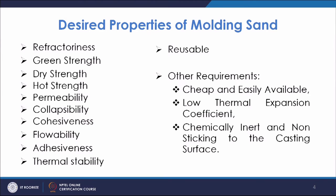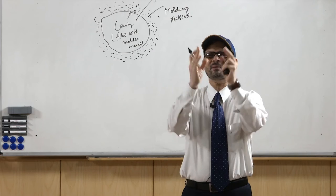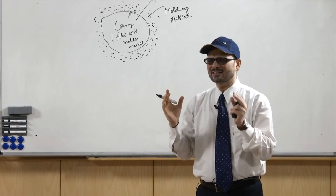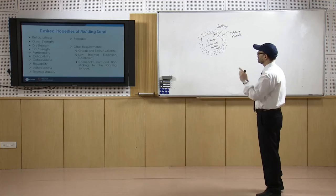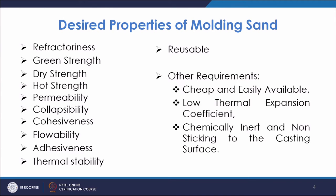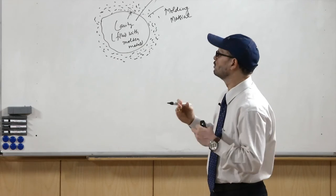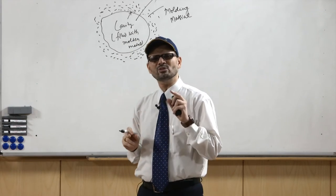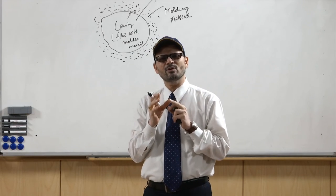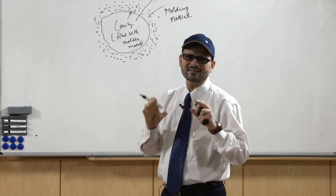Cohesiveness is the attraction between the sand grains themselves. If there is attraction between the sand grains it will help in giving the mold a proper shape. Because of cohesiveness they are together, and once put in a certain shape they maintain that shape. Flowability is the property of molding sand by which it can flow into the different corners of the mold. When putting mold material around the pattern, it should go into all the corners. By flowability it goes into all cavities and also takes intricate shapes.